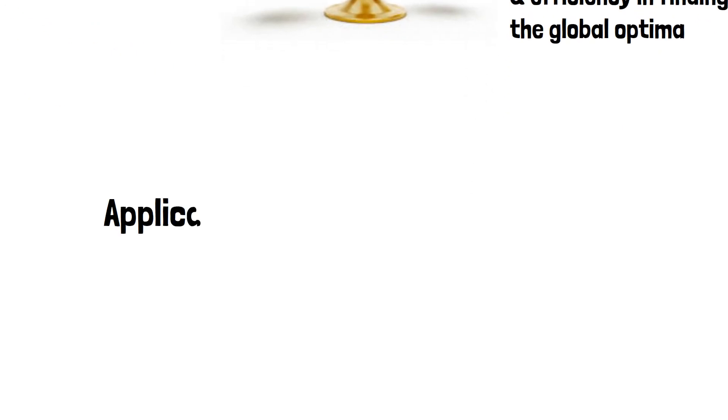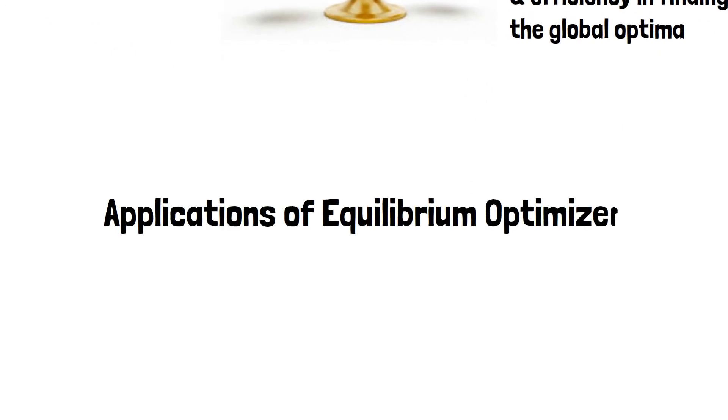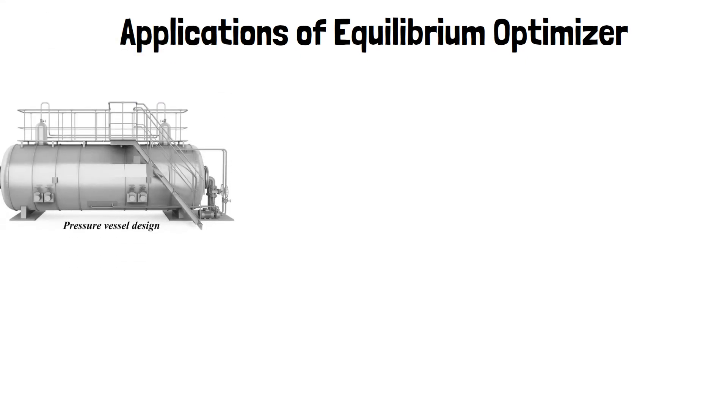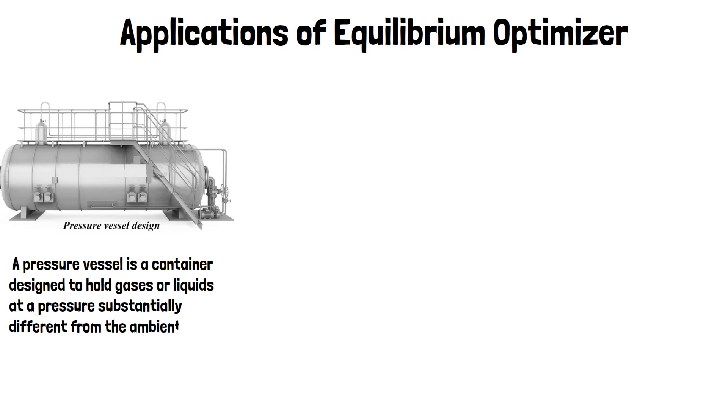Applications of Equilibrium Optimizer. There are three applications implemented in the EO technique. They are pressure vessel design. A pressure vessel is a container designed to hold gases or liquids at a pressure substantially different from the ambient pressure.